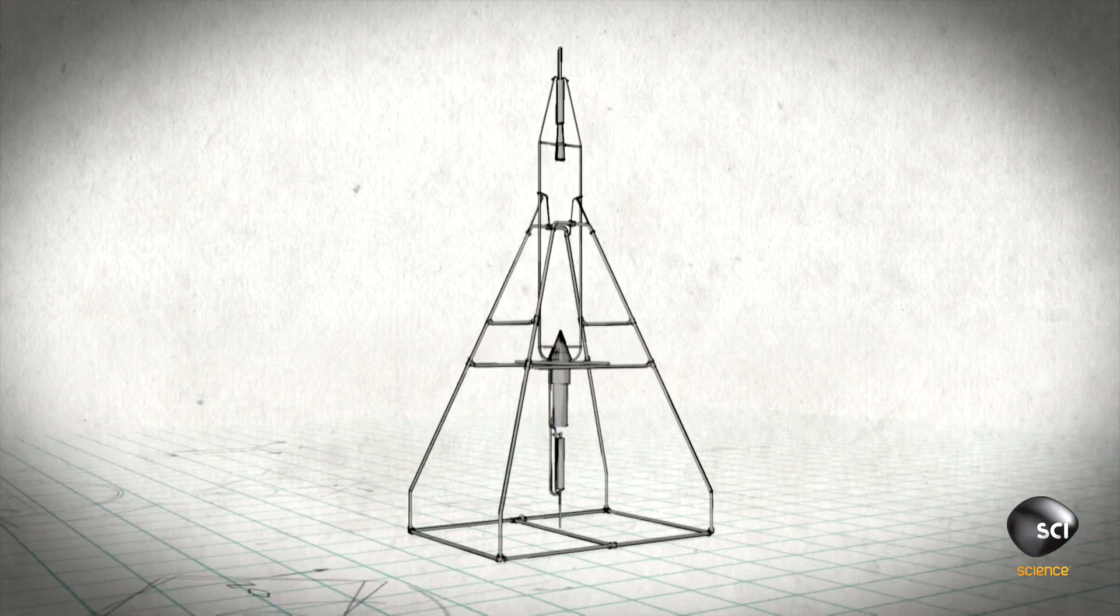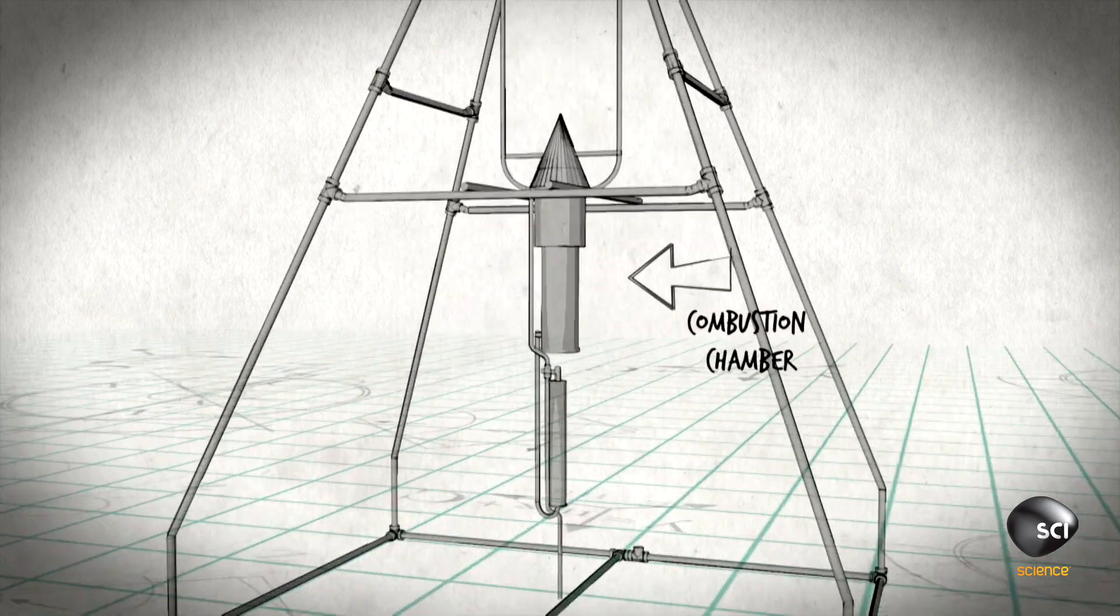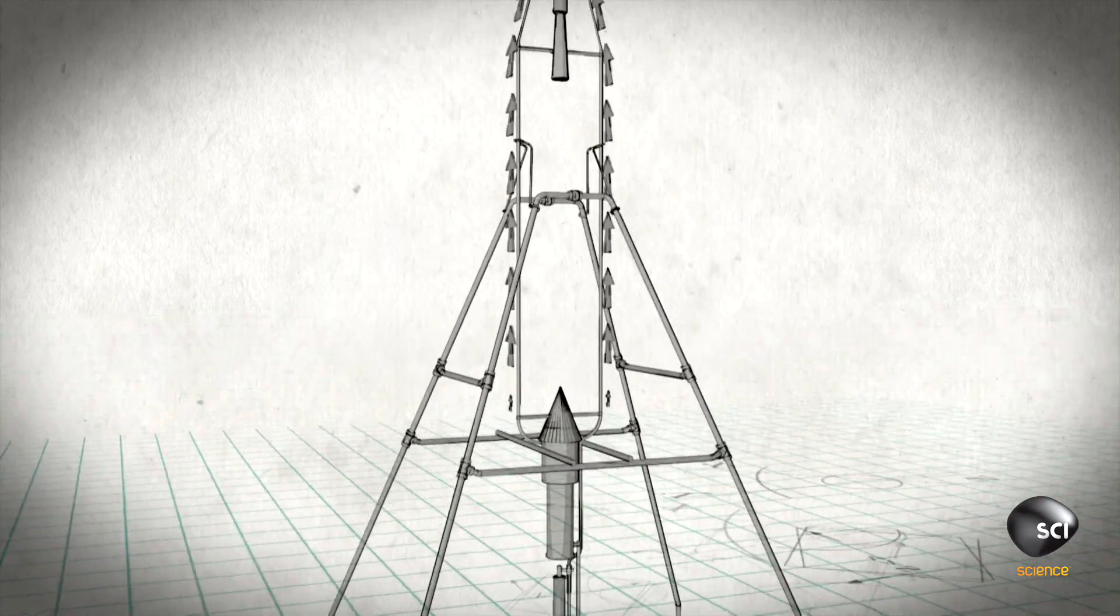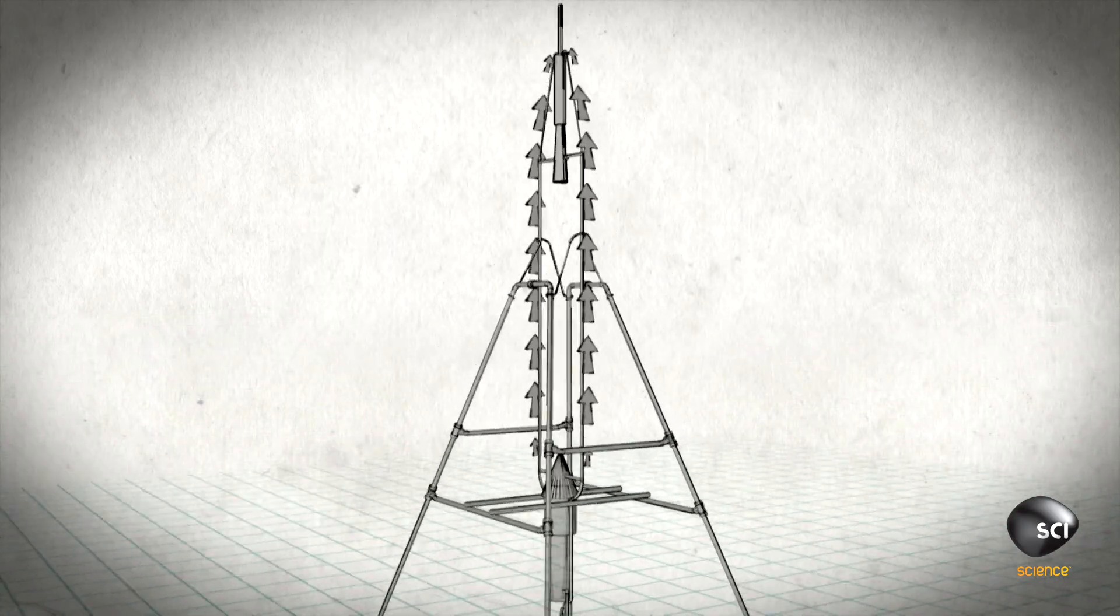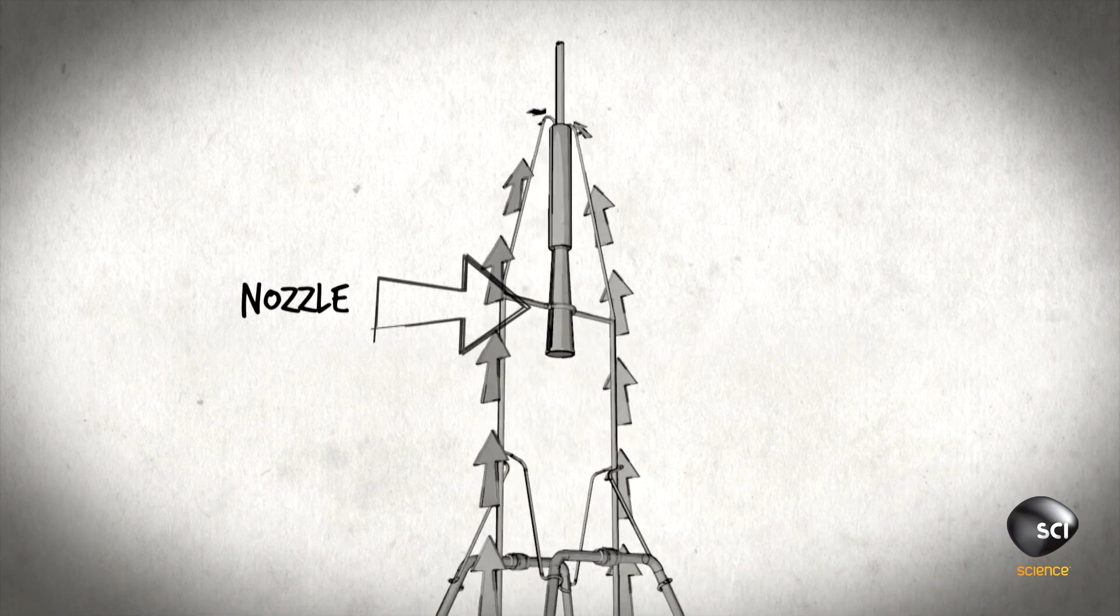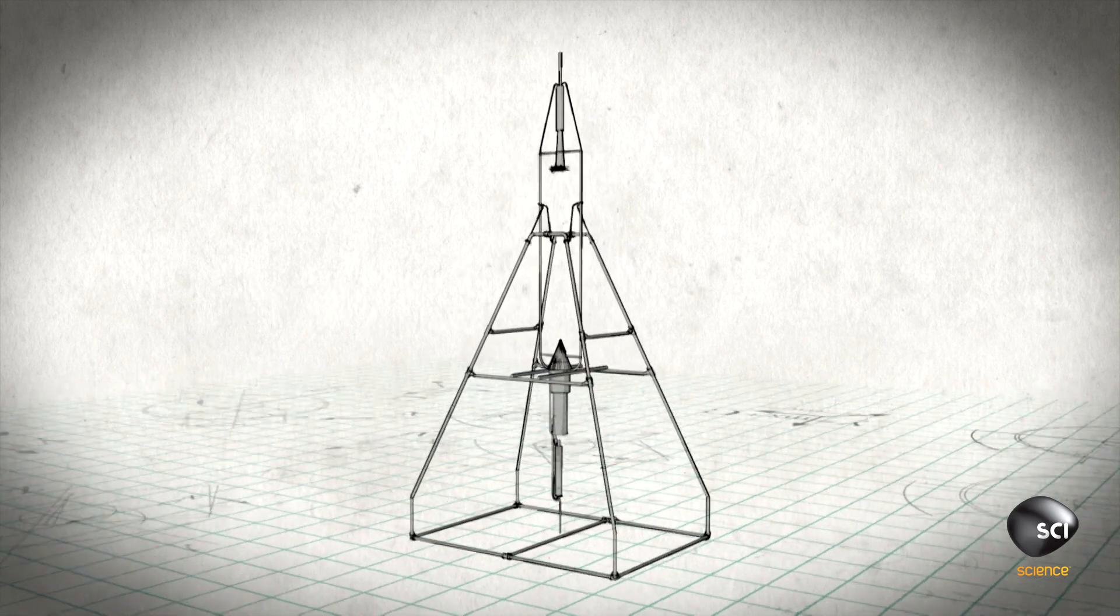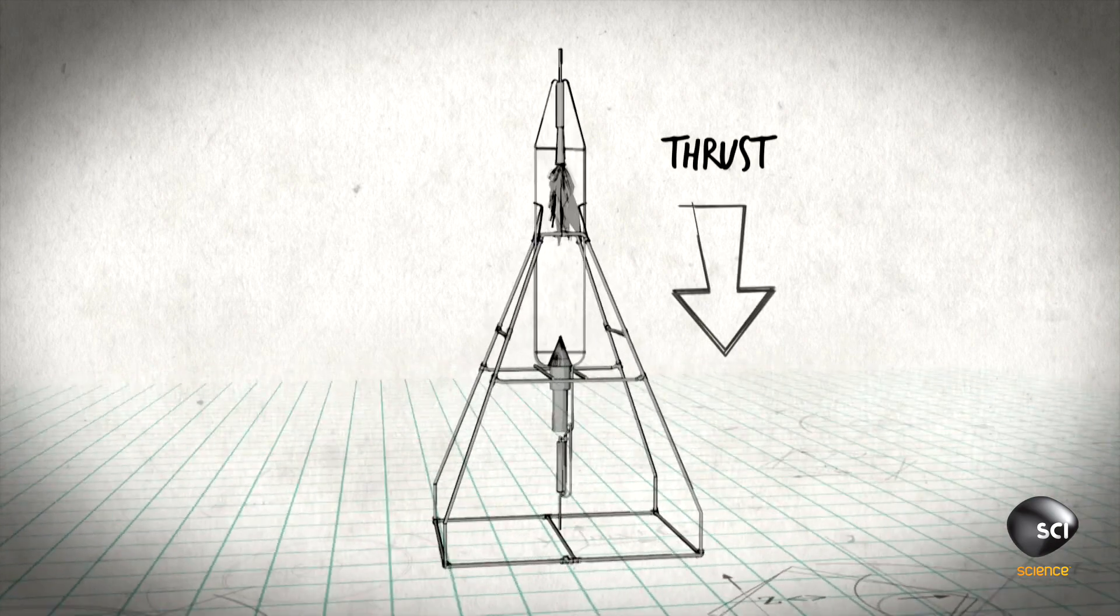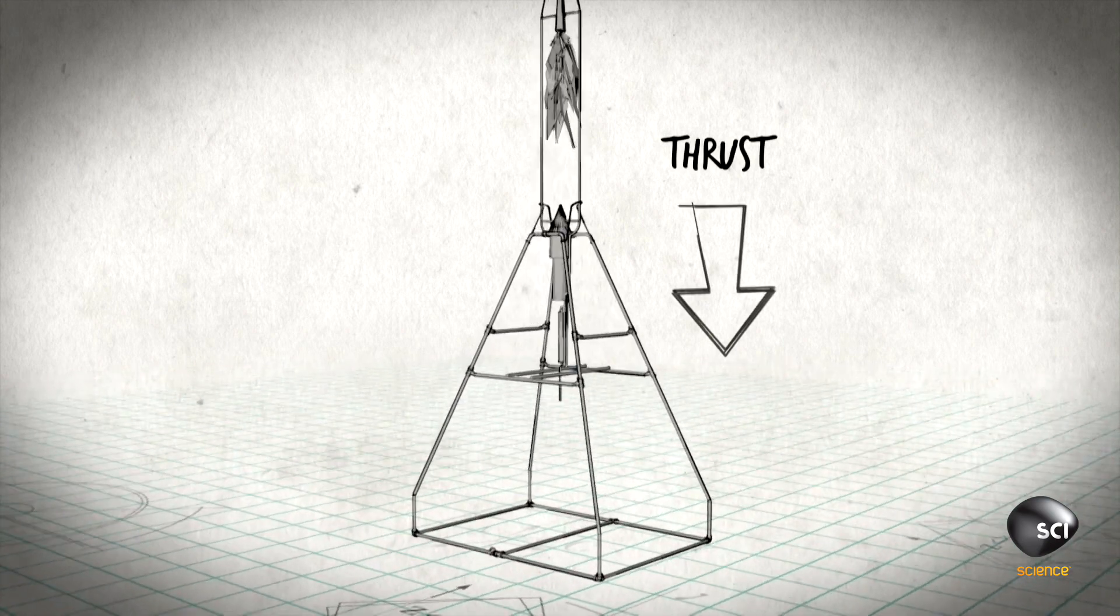Burning gasoline and liquid oxygen together in a combustion chamber creates a high pressure, high velocity stream of hot gas. Passing it up through two pipes and down a nozzle accelerates the flow of the gas even more, producing thrust to propel the rocket upward. The higher the temperature, the greater the thrust.